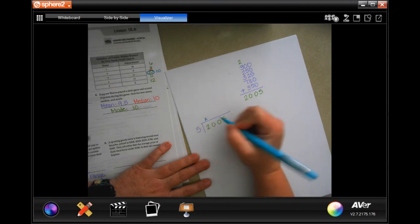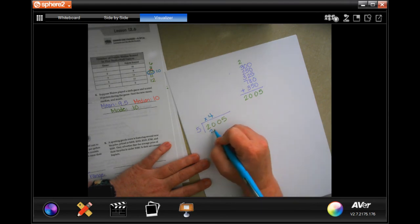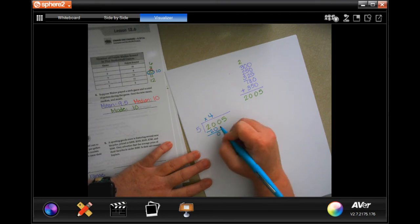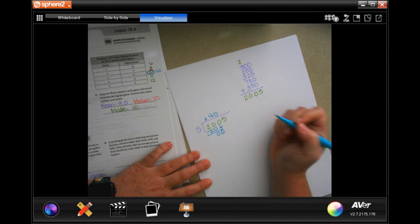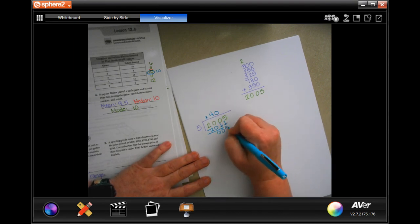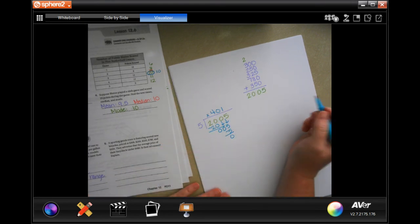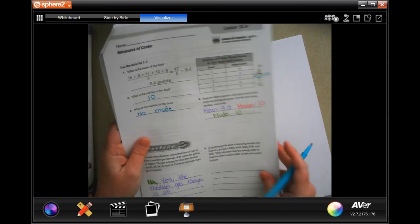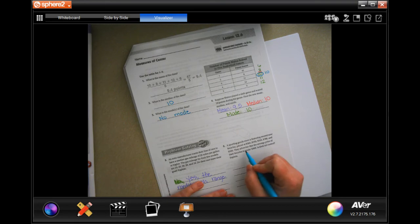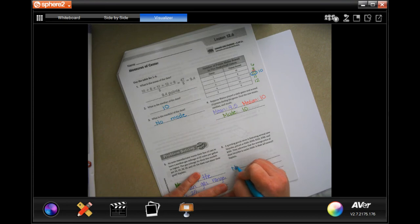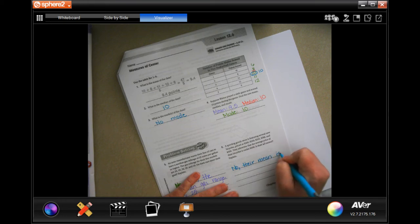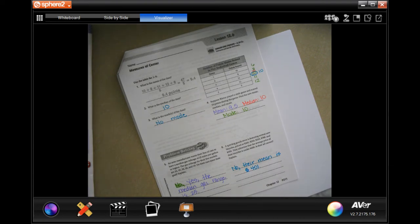Now, 5 is not going to go into 2, but it will go into 20, 4 times. Now, I'm going to bring that 0 down, but it's going to be 0. Then, I'm going to bring that 5 down. 5 goes into 5 one time. 5, subtract, get 0. So, 401. So, they advertise the average price of their bicycles is under $400. Is their ad correct? Well, no. Their mean or average is 401.